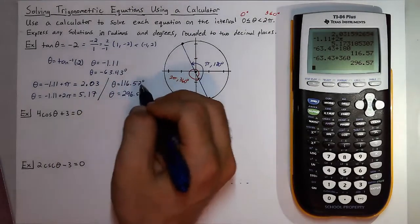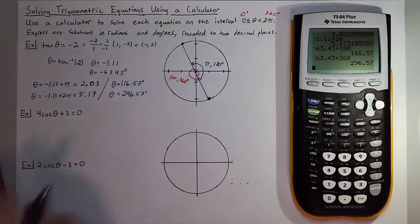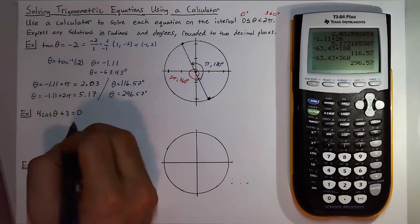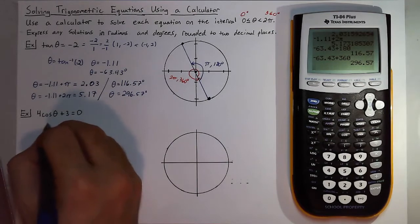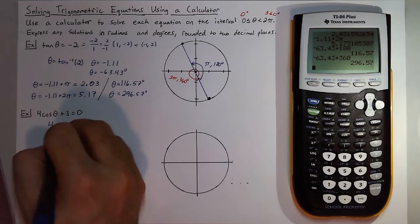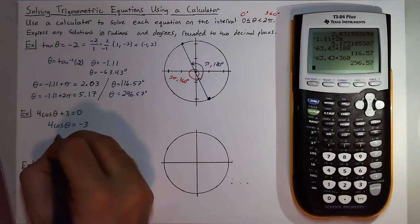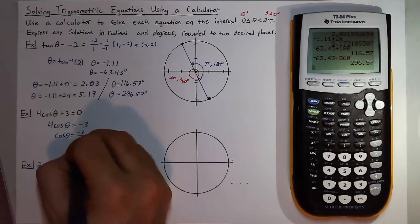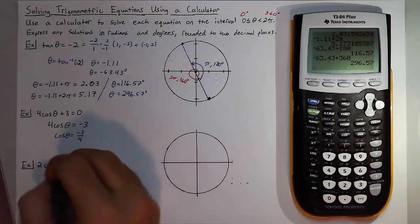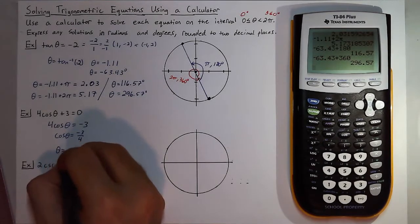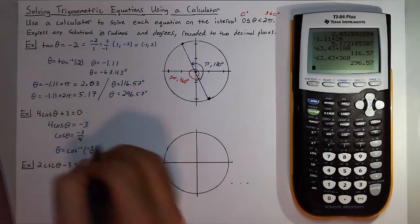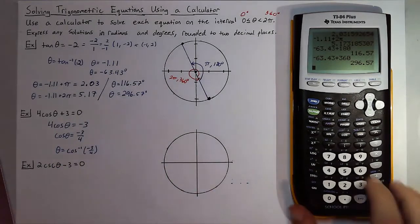So now let's look at cosine of theta: 4 cosine theta plus 3 is equal to 0. I want to get that trig function by itself so I'm going to subtract 3 and then divide by 4. So cosine theta equals negative 3 fourths. To start getting my solution I'll take the cosine inverse of negative 3 fourths.